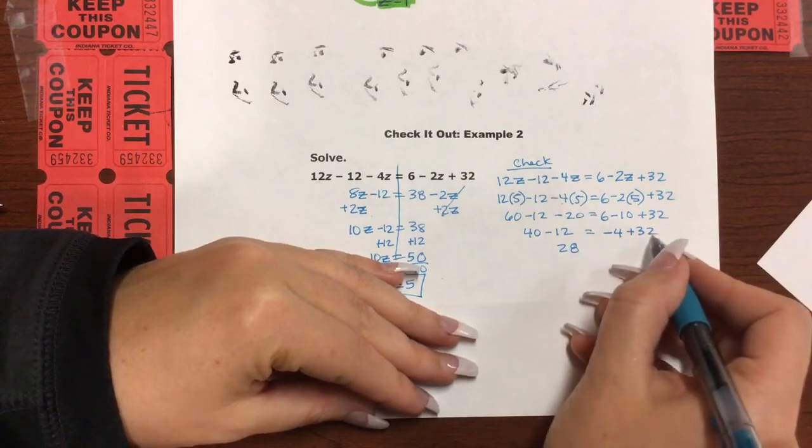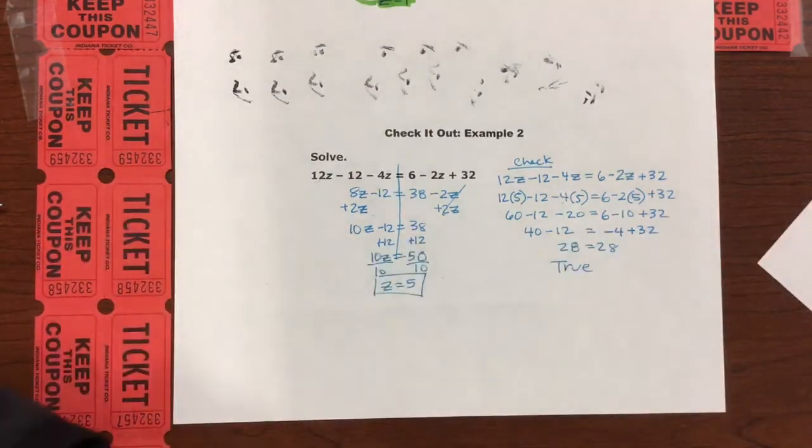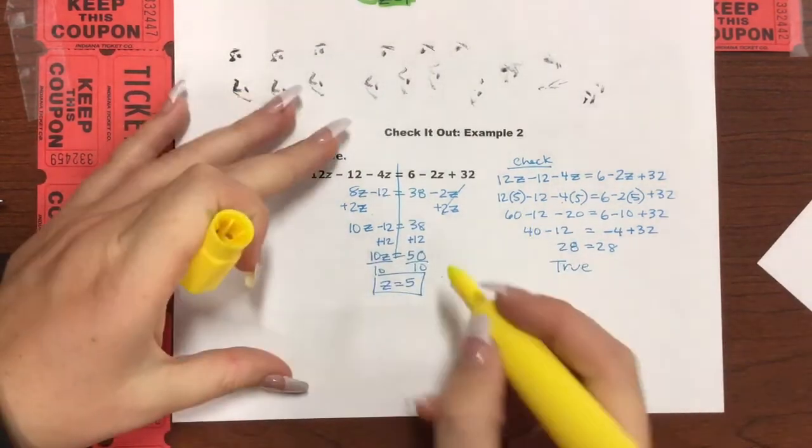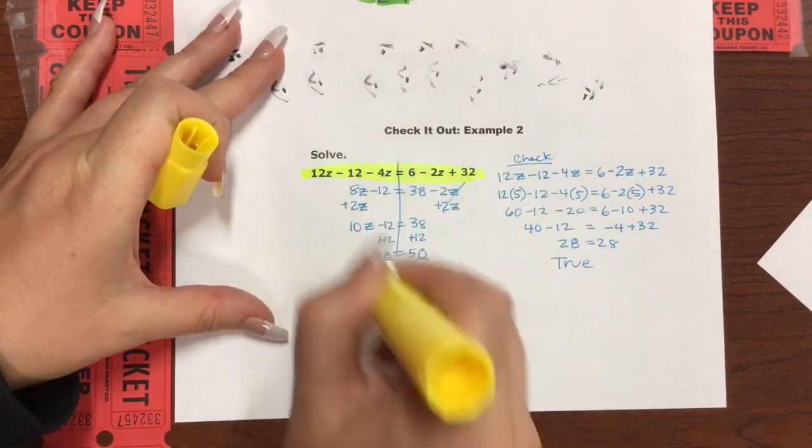Hey, this is a true statement, which is awesome, because that means that z equals 5 is the solution to the original equation.